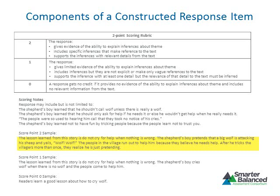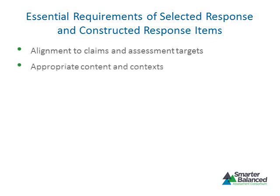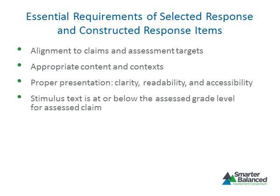The language in samples should model what is expected from a student at the grade level being assessed. When developing selected and constructed response items, several requirements are important: proper alignment to claims and assessment targets, appropriate English language arts content and contexts, and proper presentation. The stimulus text should be at or below the assessed grade level as required by the claim. Claim 1 stimuli should represent a range of difficulty, while stimulus texts for claims 2 and 4 should be below the assessed grade level.